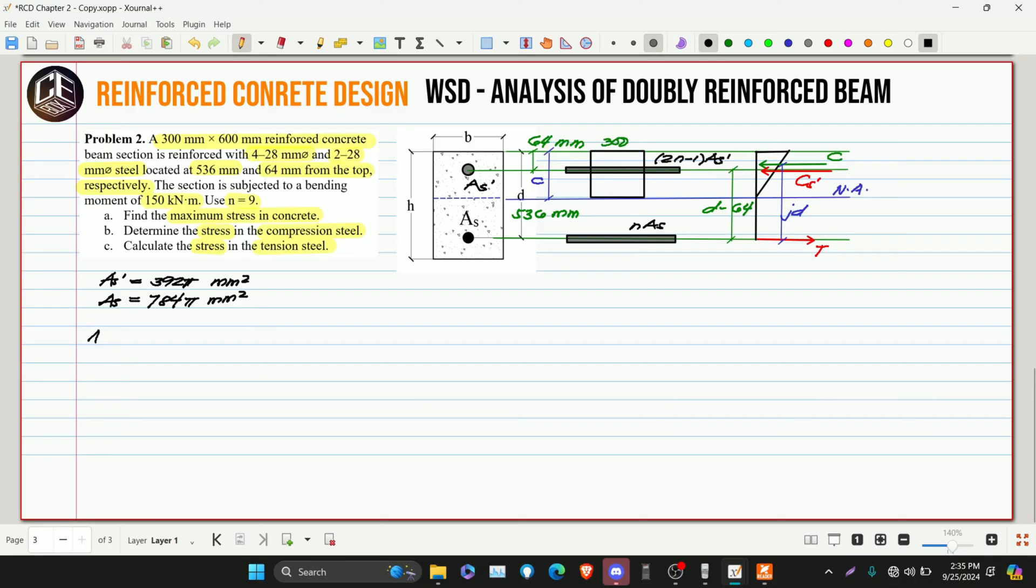For C, M top is equivalent to M bottom. So this is 300 multiplied by C, multiplied by C over 2, plus 2N minus 1 multiplied by AS prime, multiplied by C minus 64, equivalent to N times AS multiplied by D minus C. So we can get the value of C.